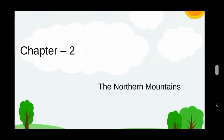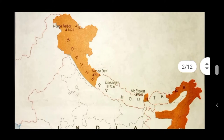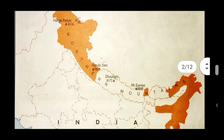Good morning dear students, welcome to our class. Today we are going to discuss chapter 2: Northern Mountains. Here we can see the northern mountains — the brownish color area on the map shows the Himalayas.